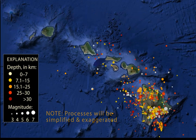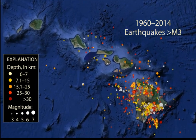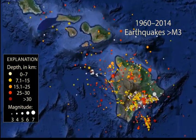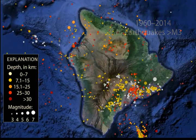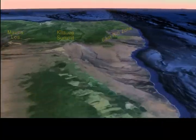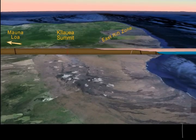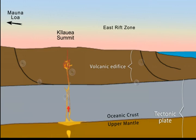The Hawaiian Islands experience thousands of measured earthquakes every year. Shown here are only those earthquakes since 1960 with magnitude greater than 3, coded by color according to depth. These earthquakes originate in three predominant source regions: two are in the volcanoes or along the volcano-ocean floor boundary, and the third is deeper in the crust and mantle.